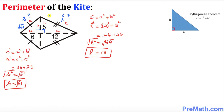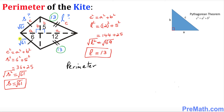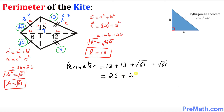Since these two triangles are congruent, this side is going to be 13 as well. And since these two side triangles are congruent, this side is going to be square root of 61 as well. So our perimeter is simply the sum of all sides: 13 plus 13 plus square root of 61 plus square root of 61, which gives us 26 plus 2 times square root of 61.